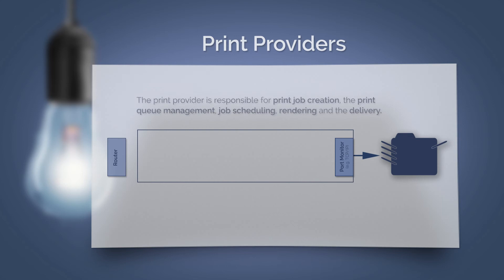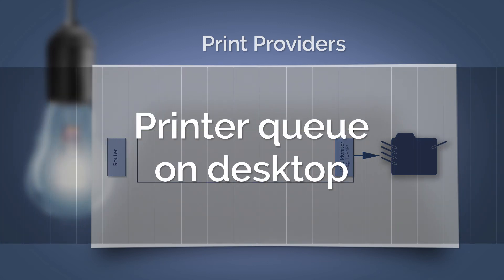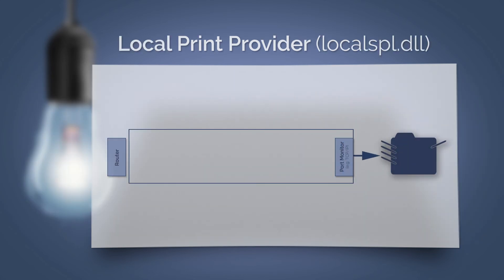Let's first talk about the local print provider. This is used when you install a printer queue on a server or a desktop, and if you use a local port such as TCP IP or LPR which is installed on the machine. If you want to print from a program, the application first asks for the printer settings of the selected printer in order to set up the pages to print. This is done with the API of the print job creation, which then opens the printer dialog.